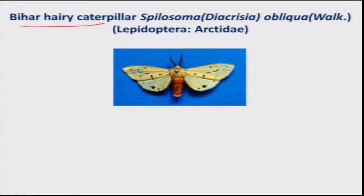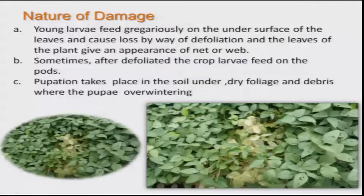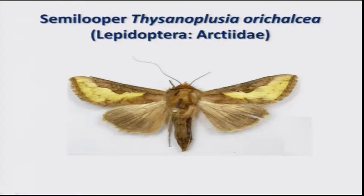Next is the Bihar hairy caterpillar, Spilosoma obliqua, which is also a polyphagous pest. The larvae is the damaging stage. It lays eggs in groups on the under surface of the leaf, and immediately after hatching, scraping of the leaf is seen — such scraped leaves can be identified even from a distance. Later, when the larvae reach second and third instar, they migrate and cause severe defoliation.